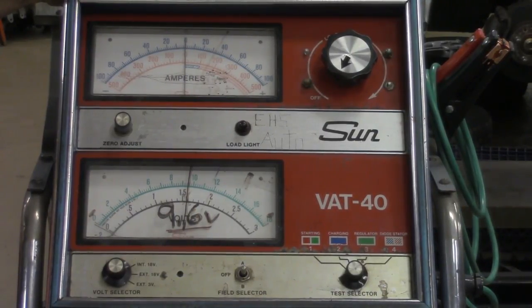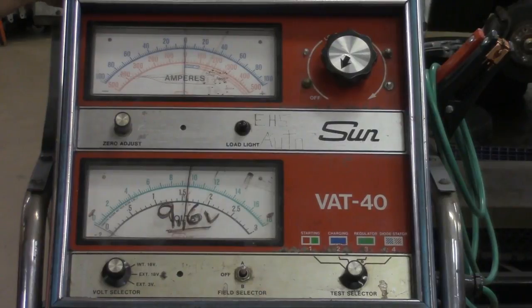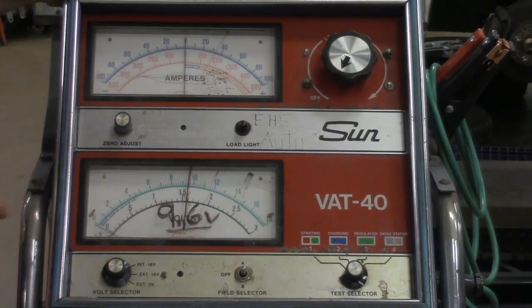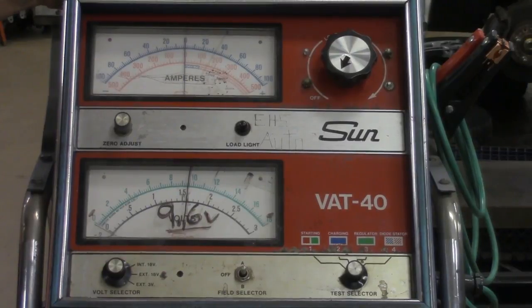On average, if it's a four-cylinder or small engine, you're looking around 150 amps. The larger engines, V8s and diesels, go upwards of roughly 300 amps of current. This VAT40 is going to measure that for us. We're going to go ahead and hook this up, and I'm going to show you how that's done.